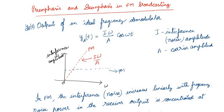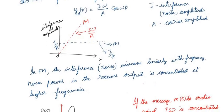We can clearly see that the interference amplitude increases linearly with omega on the x-axis. For phase modulation it is constant — simply I/A — independent of omega. For frequency modulation, the noise linearly increases with frequency, meaning the noise power in the receiver output is concentrated at higher frequencies. Interference becomes very large at higher frequencies for FM.